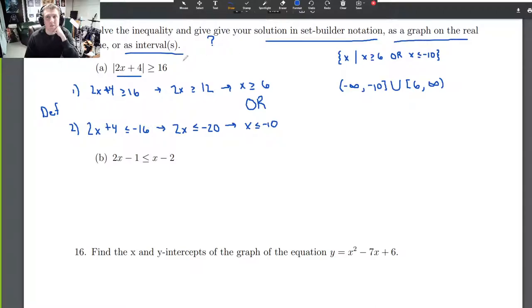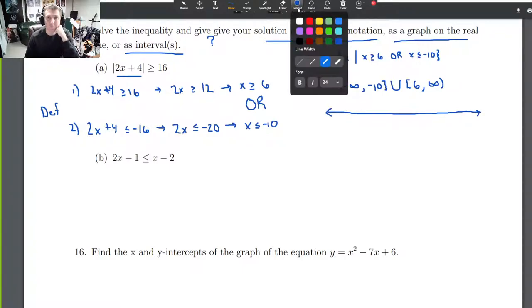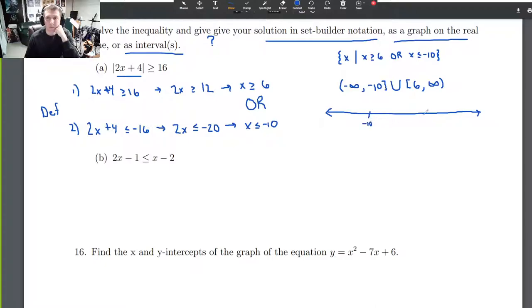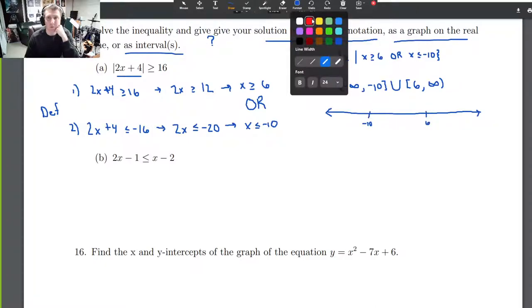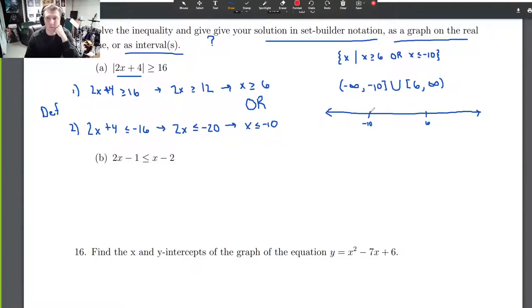And then the last option is just the graph on a real line. Again, you don't have to provide all the solutions. I'm just providing them all here. So we've got -10, we've got 6. Zero is obviously somewhere in between. We shade with a closed circle at -10 going to the left. Then we do a closed circle at 6 and shade over to the right. And that's it. Any one of these three will work.